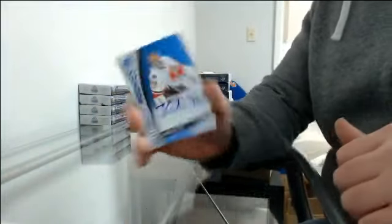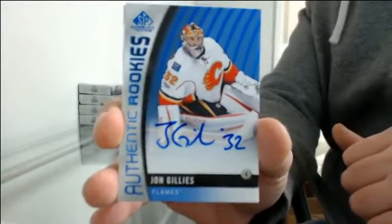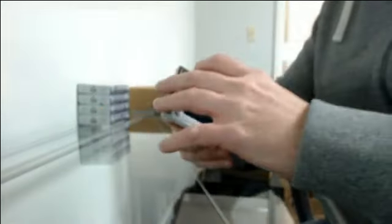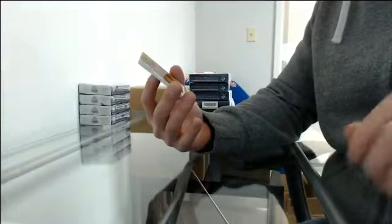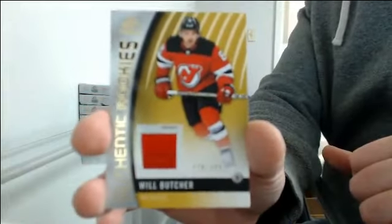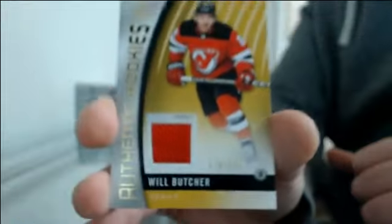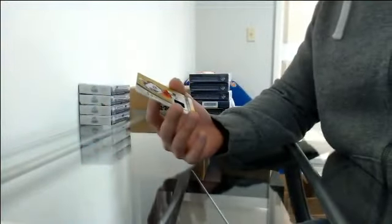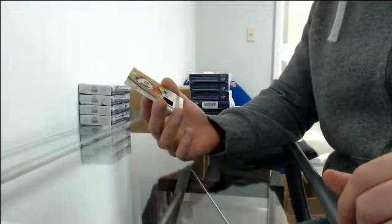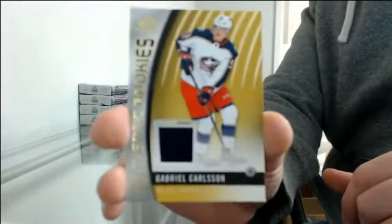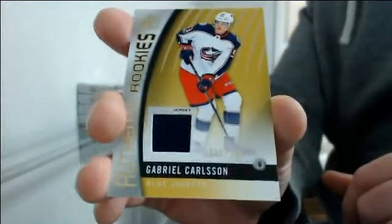Authentic rookie auto for Calgary, John Gillies. Banner year. It's going to Detroit, Thomas Tatar. Authentic rookie jersey 273 to 399 for New Jersey, Will Butcher. Finally got some Butcher cards in here. I haven't seen them since series one. And authentic rookie jersey 123 to 399 for Columbus, Gabriel Carlson. Box 7.